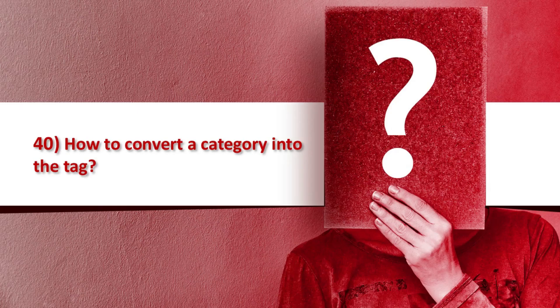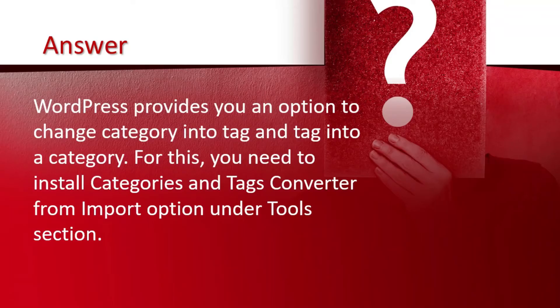Question 40: How to convert a category into a tag? WordPress provides you an option to change categories into tags and tags into a category. For this, you need to install the categories and tags converter from the import option under the tools section.